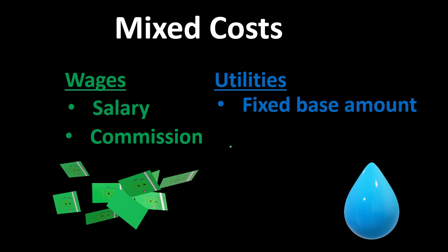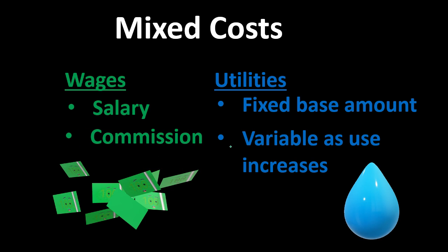Utilities might have a different breakout. For example, there may be a fixed base amount — we still pay some utilities even if we do nothing — and then costs may increase at a variable rate after that point. So when we think about mixed costs, we need to go through all of our expenses and categorize each one: is it fixed, is it variable, or is it mixed? Then we look at those mixed costs and figure out how to break them out into fixed and variable portions.